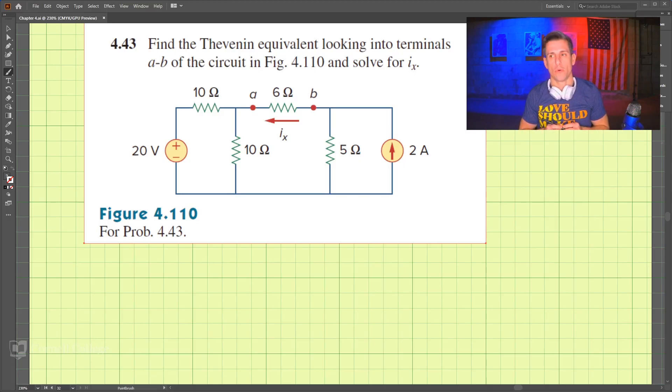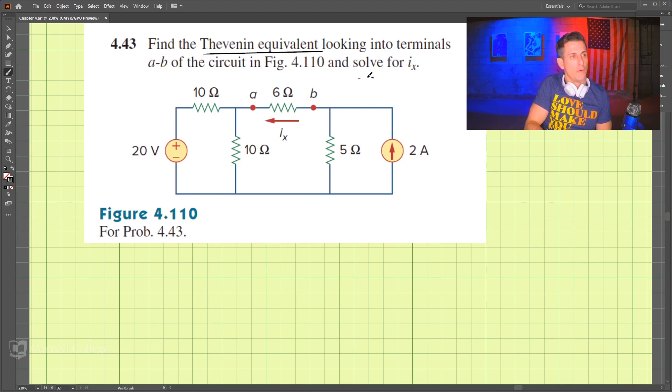This is problem 443, and what we're looking for in this problem is the Thevenin equivalent looking into terminals A and B. And then we also want to solve for Ix. So two things: Thevenin equivalent and Ix.